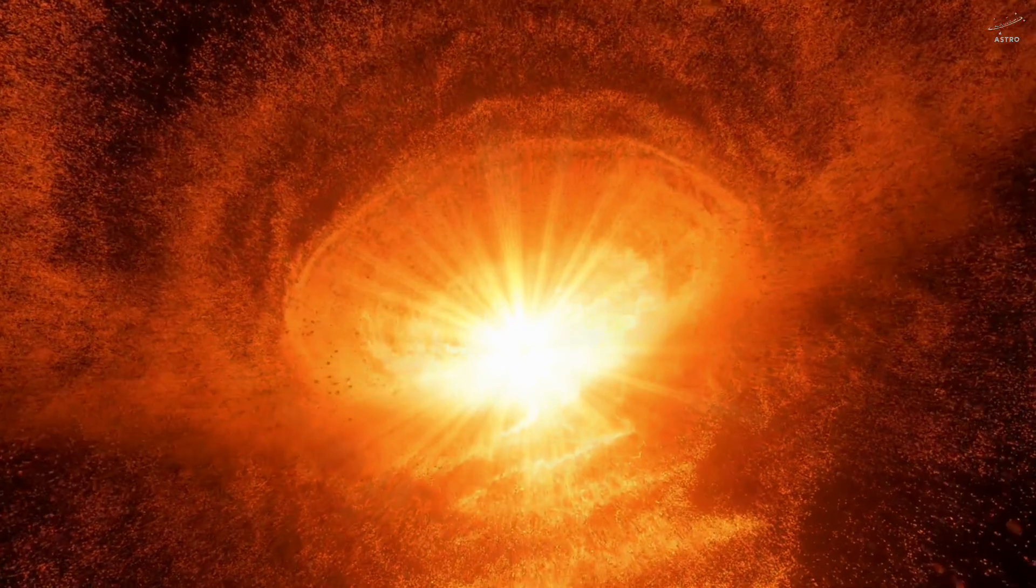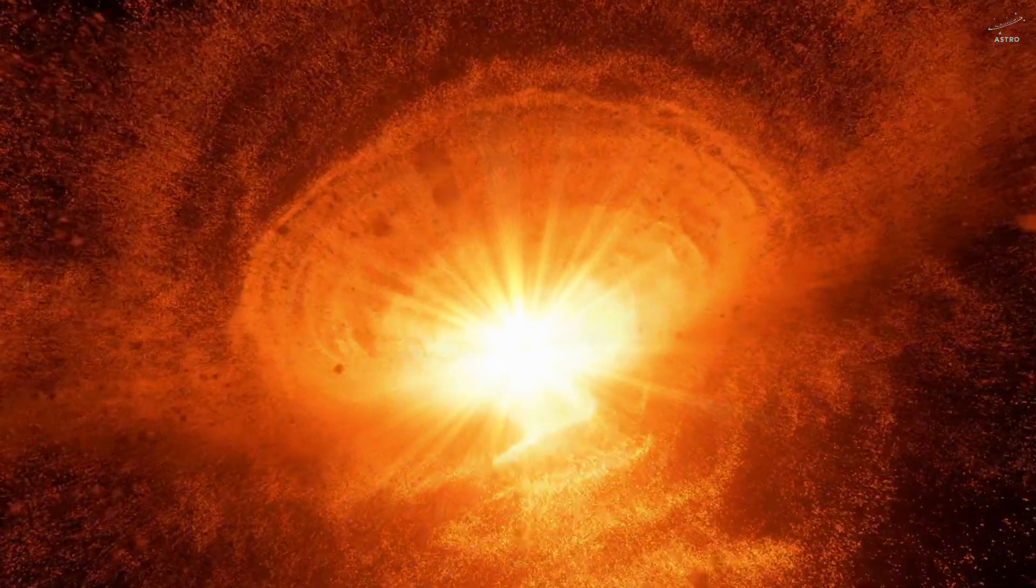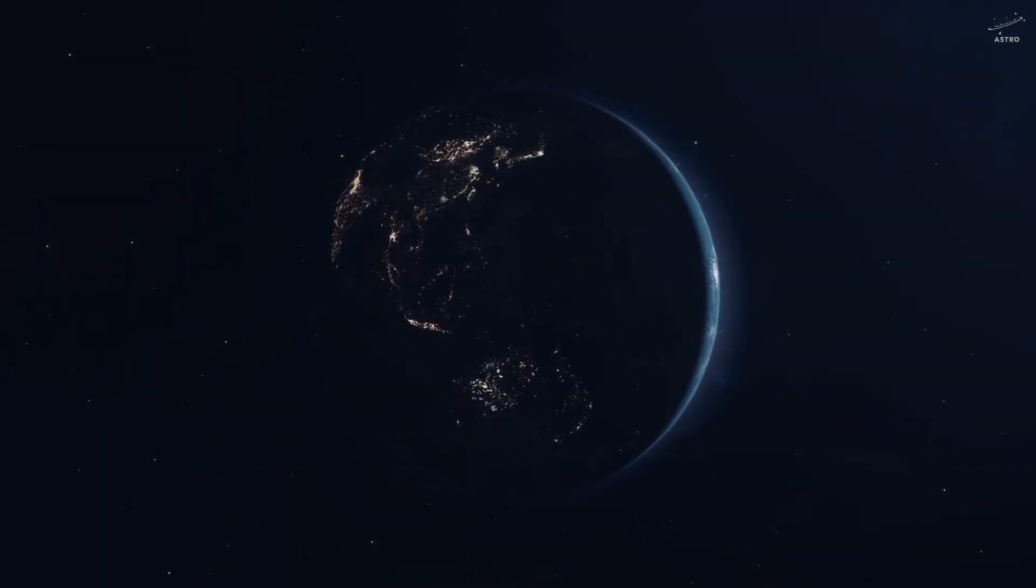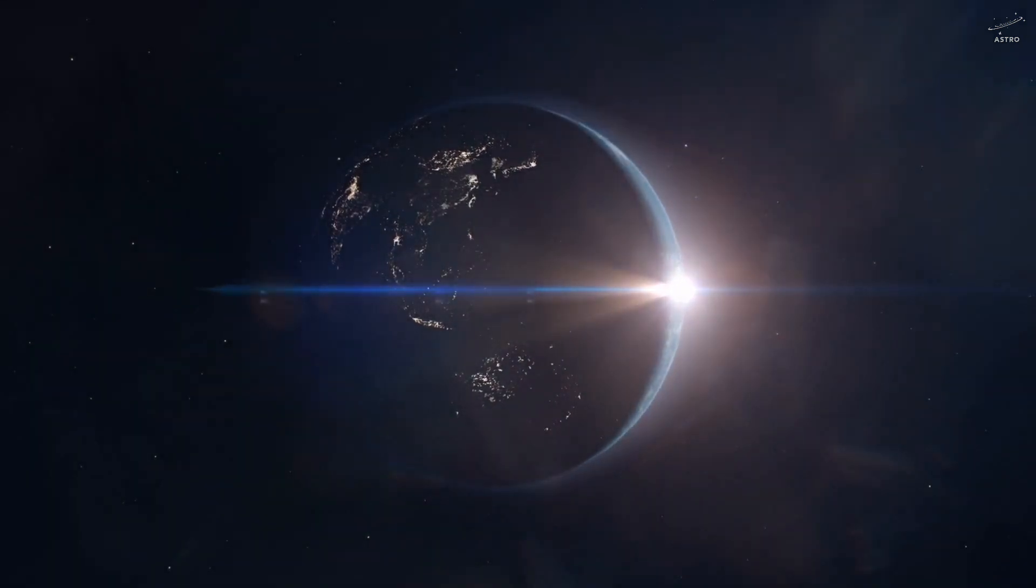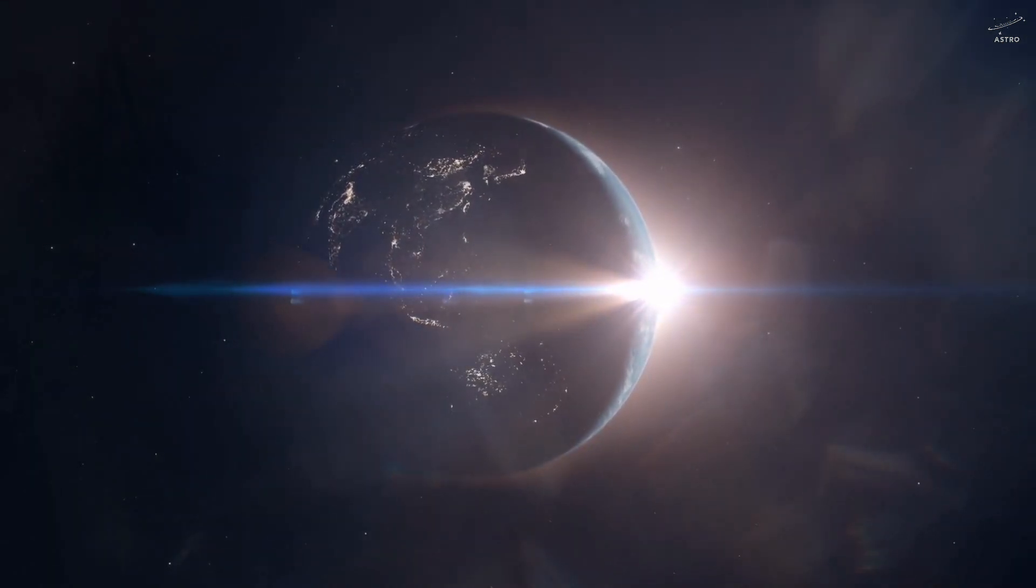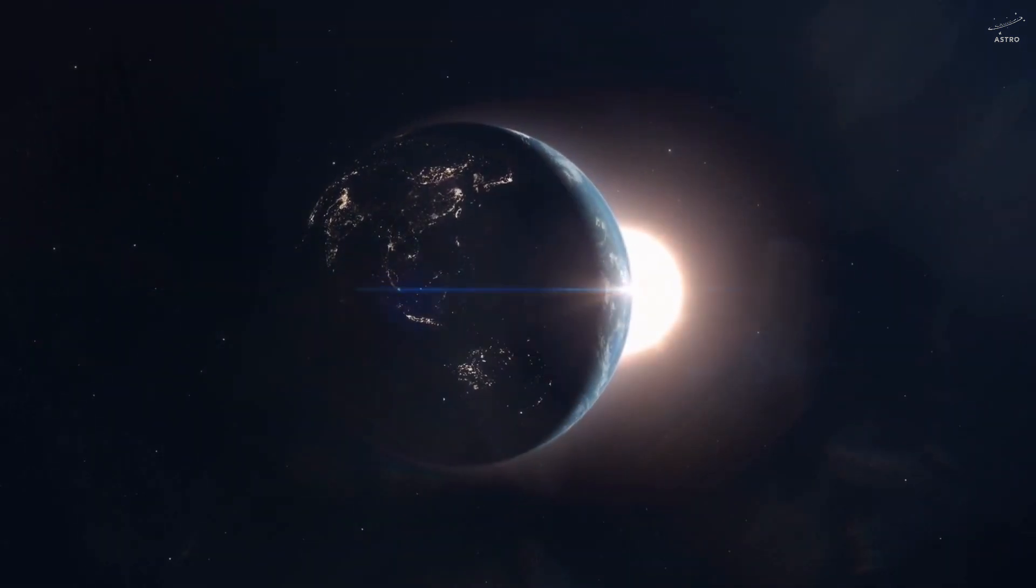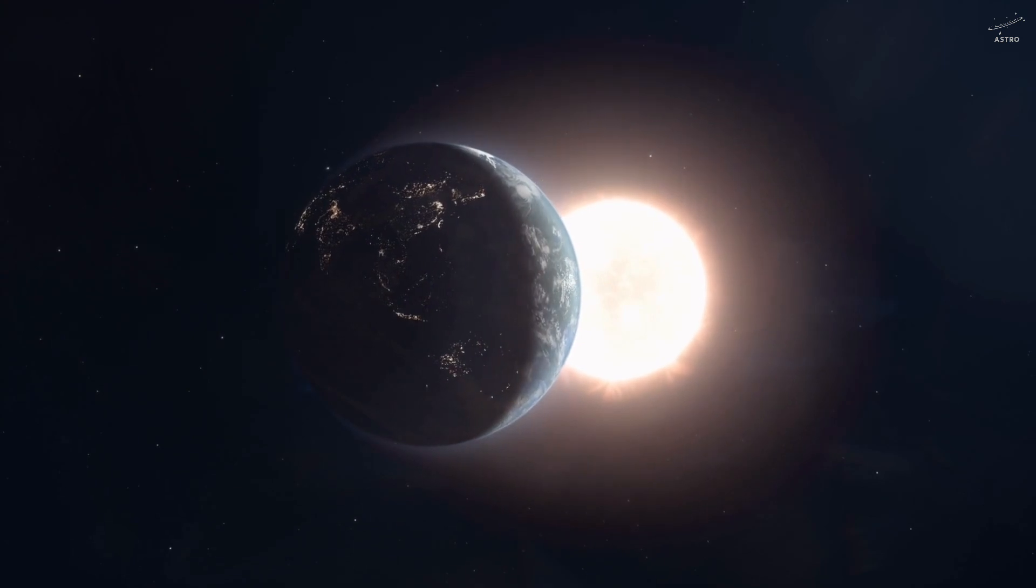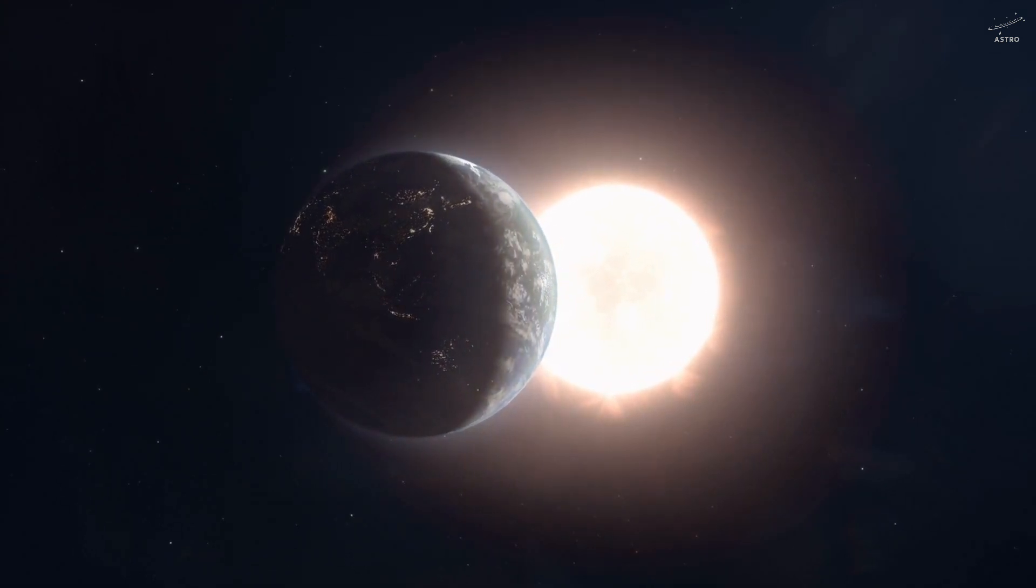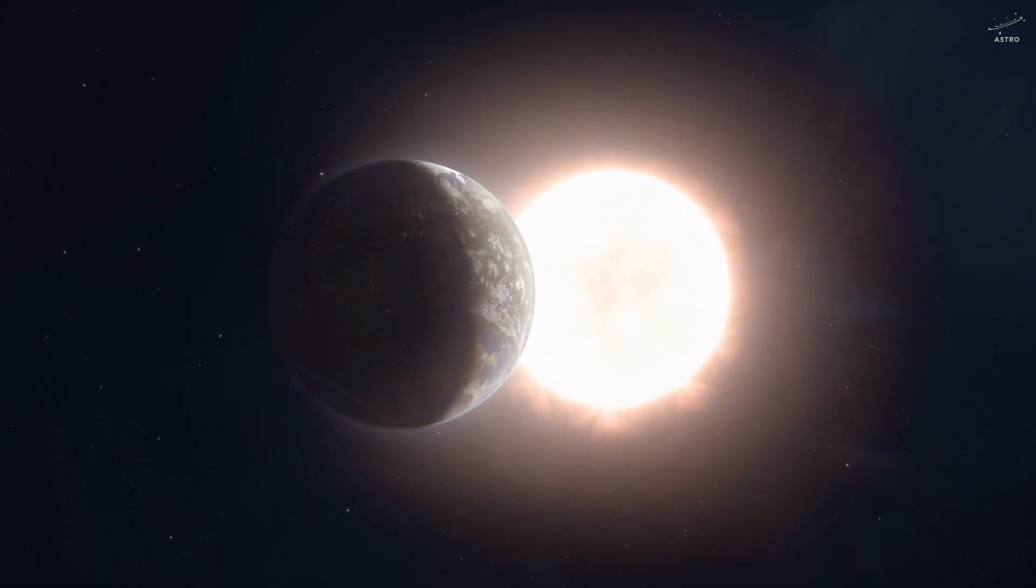The sun will start to expand, and not just a little. From a diameter of around 870,000 miles, that's about 1.4 million kilometers, it will balloon to more than 100 times its current size. It may even stretch as far as Earth's orbit. At that point, it becomes what we call a red giant.